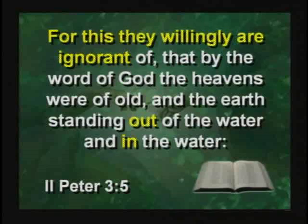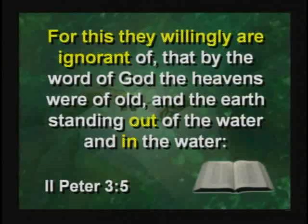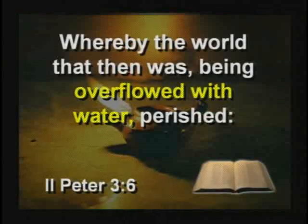The uniformitarian doctrine holds that the way things are happening now is the way they've always been — long, slow, gradual processes. The Bible says the scoffers are willingly ignorant — in the Greek, that means dumb on purpose. They are willingly ignorant of how God made the heavens — and notice 'heaven' is plural — and how the earth was standing in the water and out of the water. The world was overflowed with water and perished. The two things scoffers are ignorant of are the creation about 6,000 years ago and the flood about 4,400 years ago.